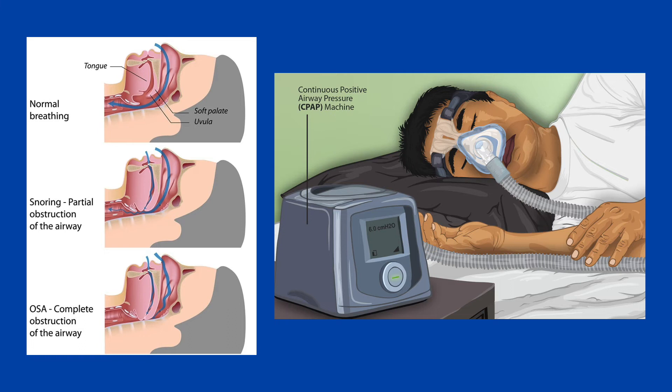For milder cases, there are other things you can do. You can lose weight, since obesity is a factor. Sleeping on your side is preferable to sleeping on your back as more air can get into your lungs. The NHS actually recommends taping a tennis ball to the back of your pyjamas so that when you sleep you can't roll onto your back. Not smoking, drinking less alcohol especially before sleep, and not taking sleeping pills unless prescribed by your doctor are also very important.